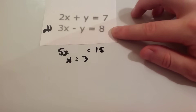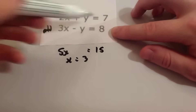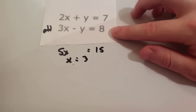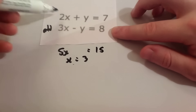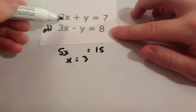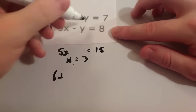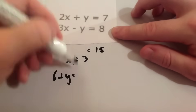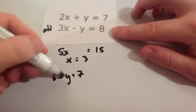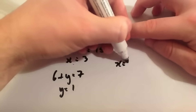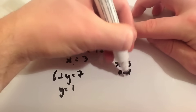We've found x equals 3, so now we need to find y. Substitute x equals 3 into the top equation: 2 times 3 is 6, plus y equals 7, so y must equal 1. And indeed 6 plus 1 equals 7. So the solution is x equals 3 and y equals 1.